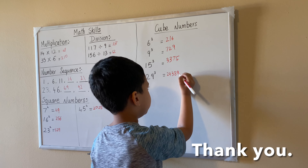6 cubed equals 216. 9 cubed equals 729. And 15 squared equals 3,375. 29 squared equals 24,389. 30 squared equals 5,389. 31 squared equals 6,389. Thank you.